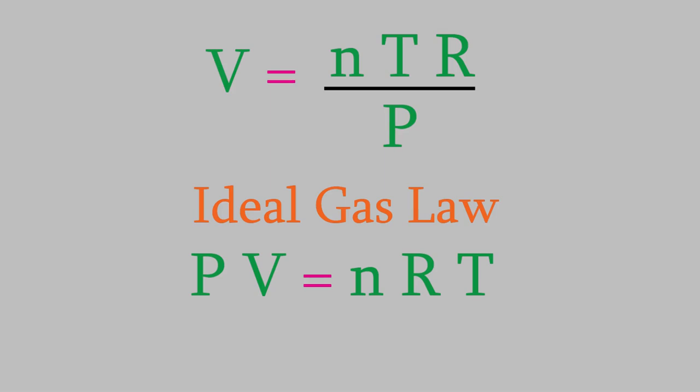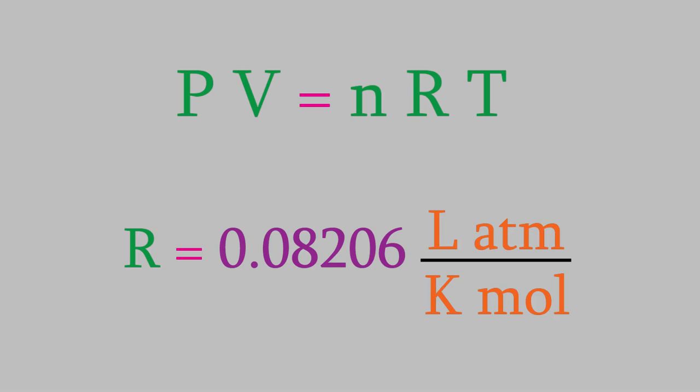As we'll see in a minute, this ideal gas law is one of the most useful equations about gases we have. First though, I want to tell you about that number R. That's called the gas law constant, and it always has the same value. Just like Avogadro's number or the speed of light, it's a number you should try to memorize as soon as you can, because we'll use it often in the rest of this course and in general chemistry too. R is equal to 0.08206 liters times atmospheres divided by kelvins times moles. That's a complicated unit, but it's really helpful to remember it because it tells you what the units need to be for everything else in the equation.